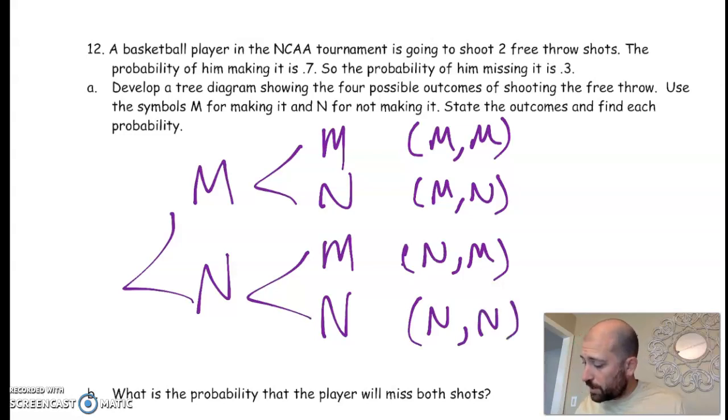Now I'm going to put in the probabilities. Next to make is 0.7, next to miss is 0.3. So to find the probabilities for each of those outcomes, I'm going to multiply.